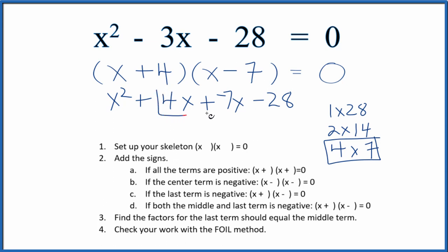I can combine these here, since they're both similar. And I end up with x squared, negative 7x, and 4x is negative 3x minus 28. And that is what we started with.